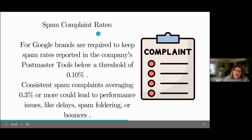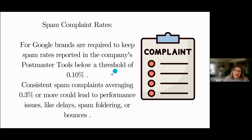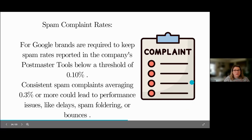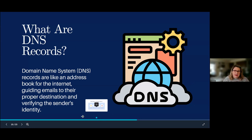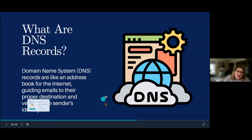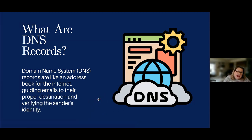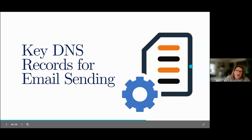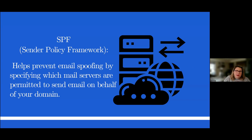For spam complaint rates, you only want one person out of a thousand to complain that you are spamming them. The way to prevent that is to have people opt in to your emails and marketing. Now here's the techie part — the DNS records for domains. It's an address book for the internet, and it helps emails get to the proper destination and verifies the sender's identity. There are three key ones for email deliverability.